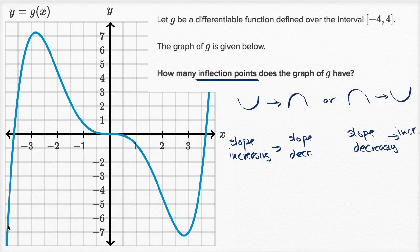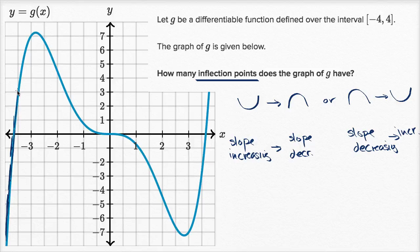So let's think about that on this graph. As we start off at the extreme left, it seems like we have a very high slope — it's a very steep curve. It stays increasing but gets less positive, so our slope is at a high level but it's decreasing. It keeps decreasing, going to zero, and then it becomes negative — so our slope is still decreasing.